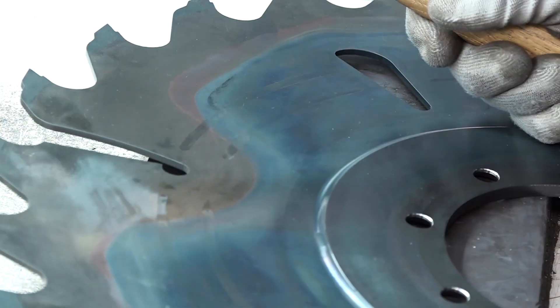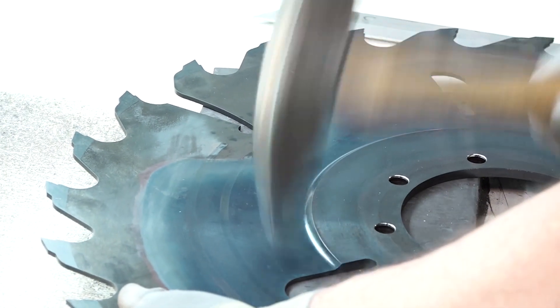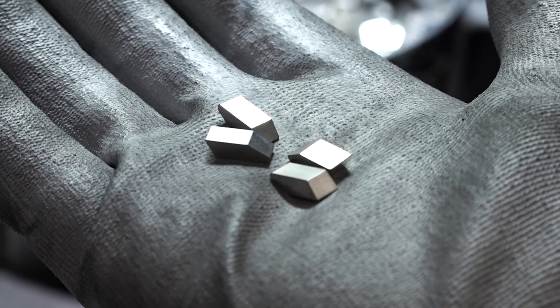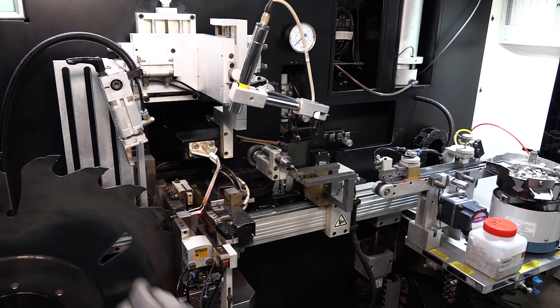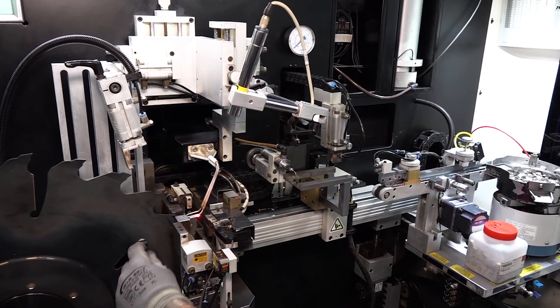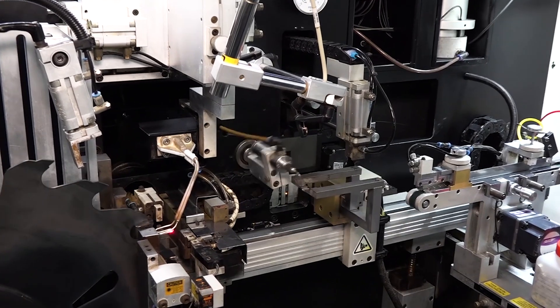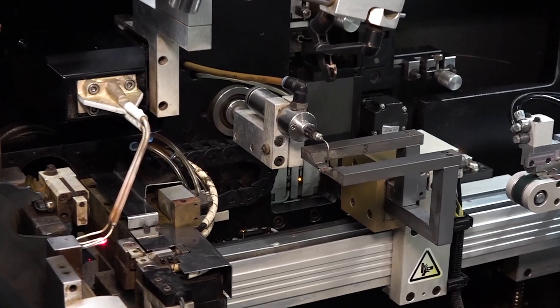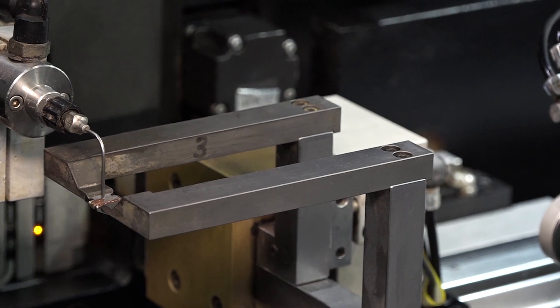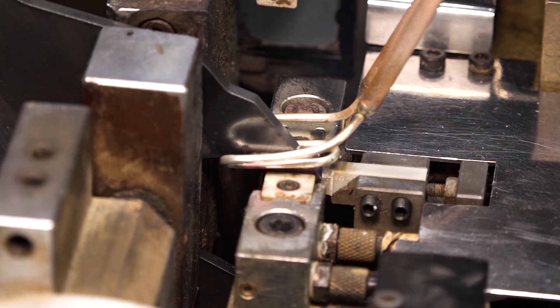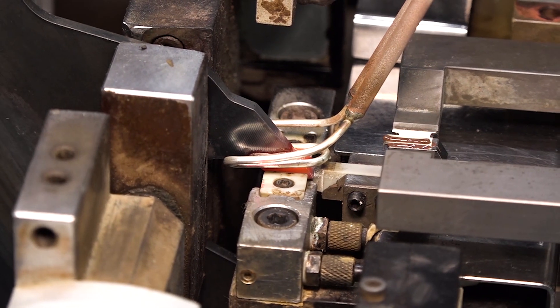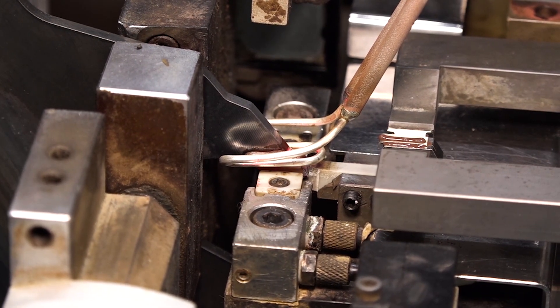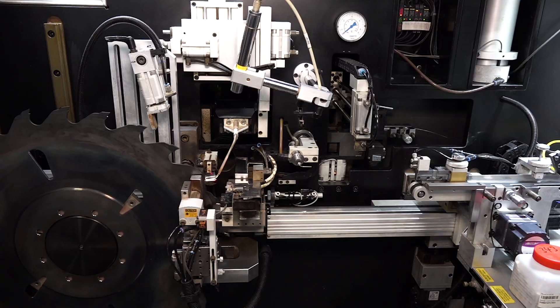At this stage, the tool is still missing the carbide teeth so that it can do its job in the sawmill. Carbide consists mainly of cobalt and tungsten. The mixing ratio determines the behavior in use. The tungsten carbide plates are bonded to the base body at a temperature of about 700 degrees Celsius. A special silver solder is used as a connecting link, which has damping properties that can better absorb the forces acting during use.